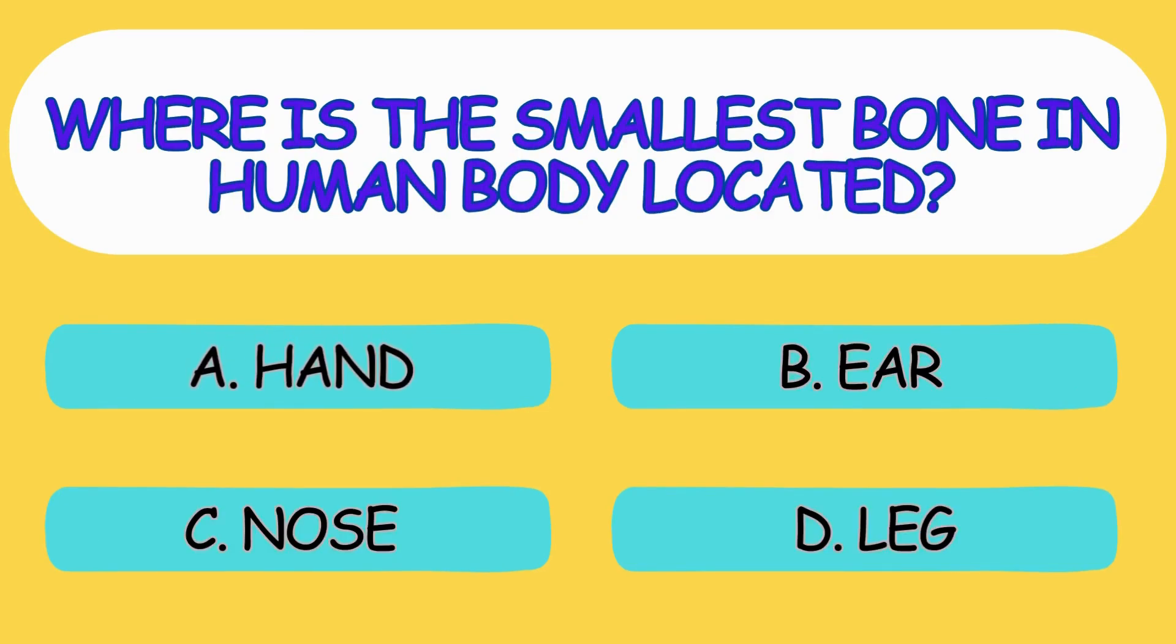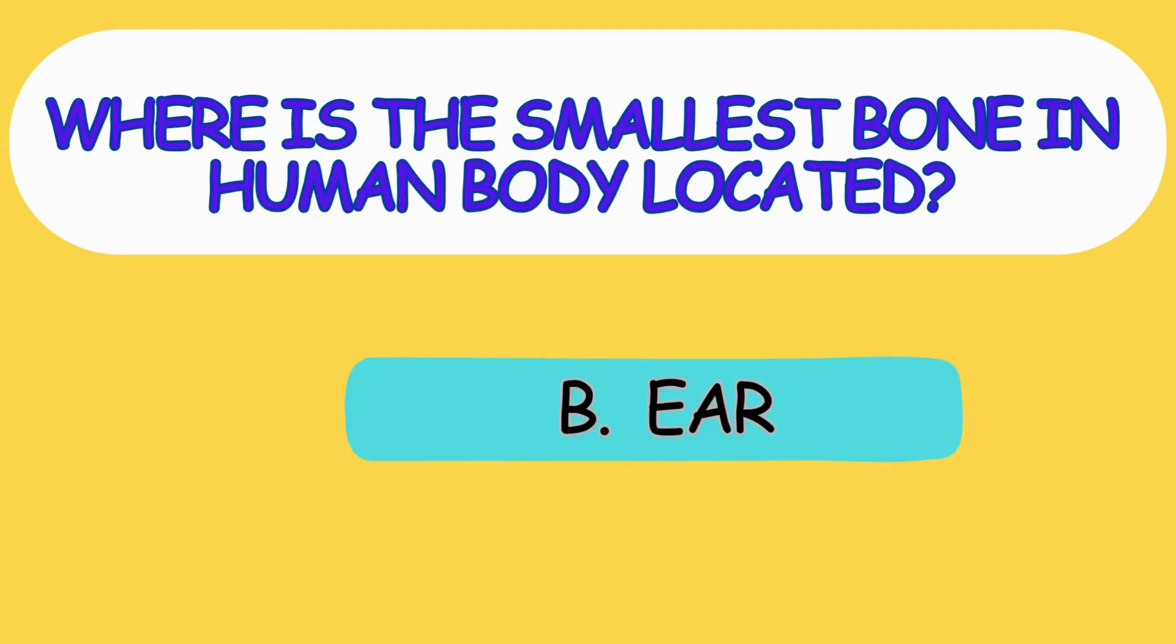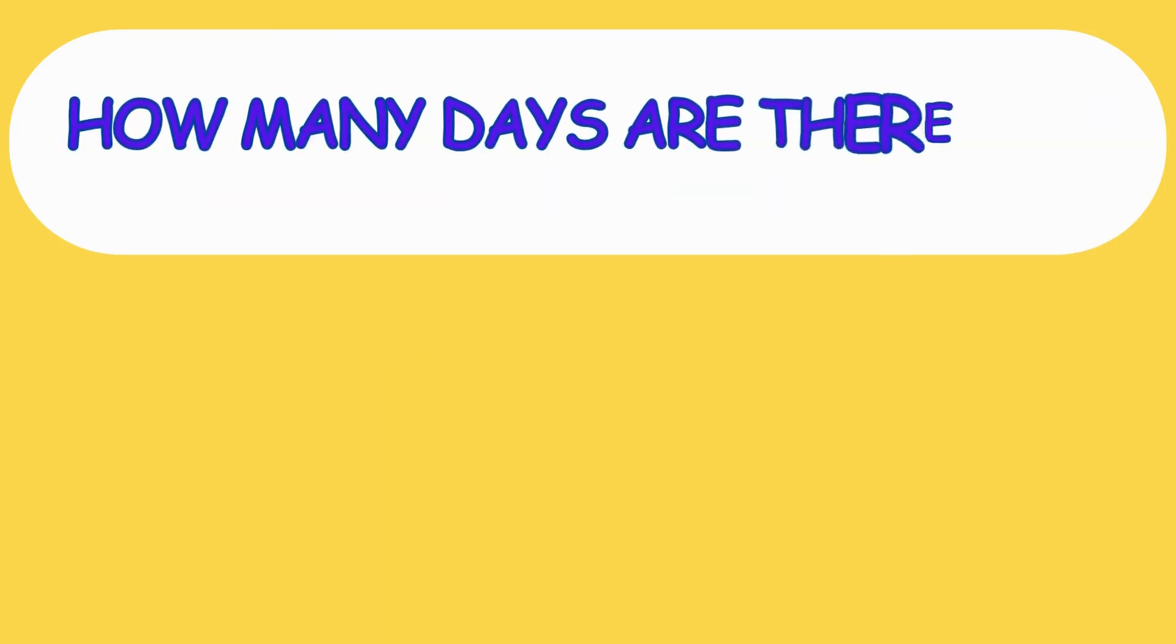Where is the smallest bone in human body located? A. Hand, B. Ear, C. Nose, D. Leg. The answer is option B, Ear.